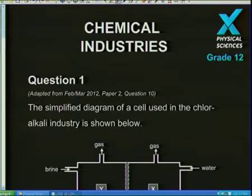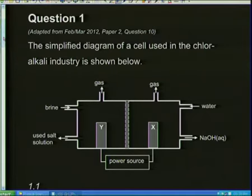We're going to jump into at least three or four questions today and deal with the major chemical industries. We'll see how to use a redox table, deal with a rate question or equilibrium question. Starting with question one from February and March 2012 — the March/February papers seem to be a little bit more challenging. If you're looking for extra challenge, go for those papers. This was question 10. You can get these papers online for free. I've got a simplified diagram of a cell used inside the chloralkali process.